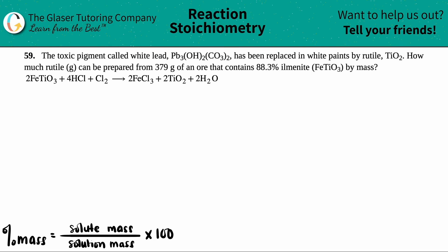Number 59. The toxic pigment called white lead, which is Pb3(OH)2(CO3)2, has been replaced in white paints by rutile, which is TiO2. How much rutile in grams can be prepared from 379 grams of an ore that contains 88.3% ilmenite, which is FeTiO3, by mass?